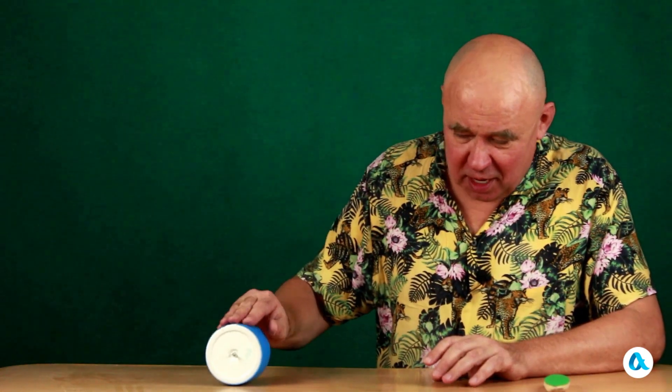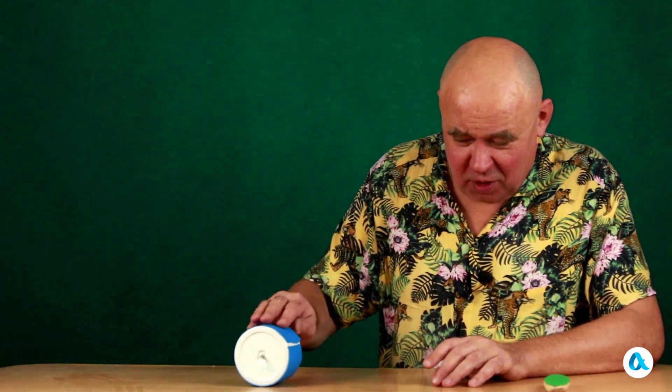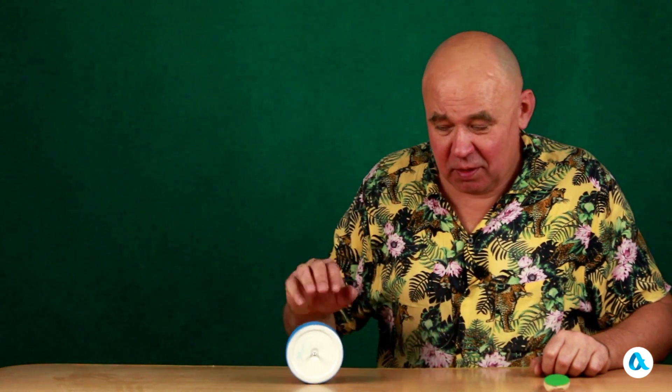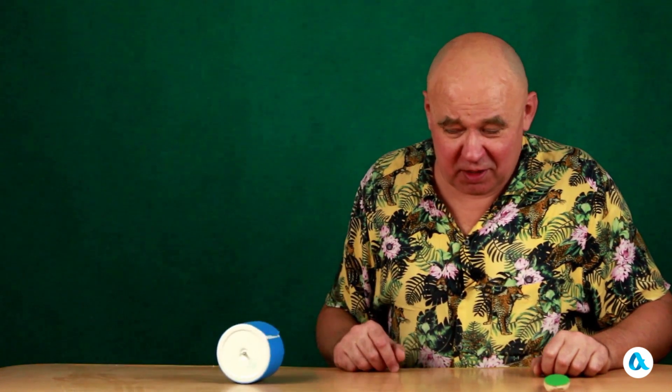And all of this reminds me of yet another well-known toy. It is simply a jar with a rubber band that is attached to a weight on the inside. And this jar has the ability to roll across the table in one direction and then in the other direction. And it does not violate the law of conservation of momentum at all, because the reaction of support forces it to move in the opposite direction, thereby maintaining the principle of momentum conservation.